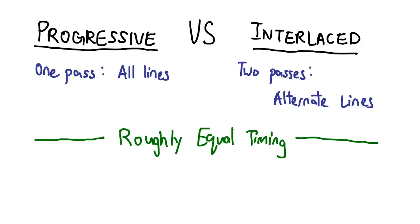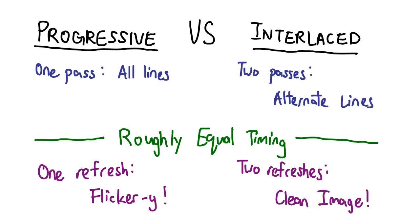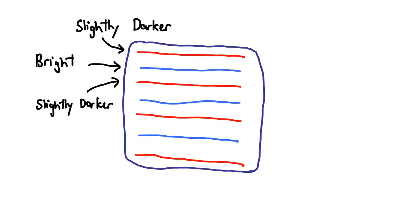However, the flicker issues are no longer present, since each area is essentially scanned twice as often. The first set of lines have hardly begun to fade when the second set is drawn on.